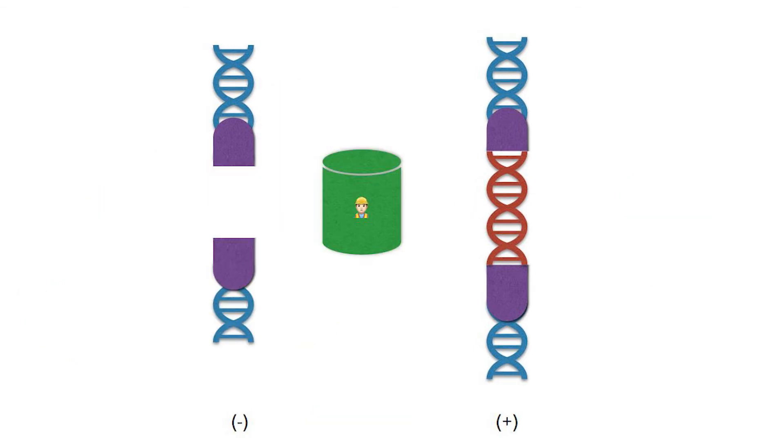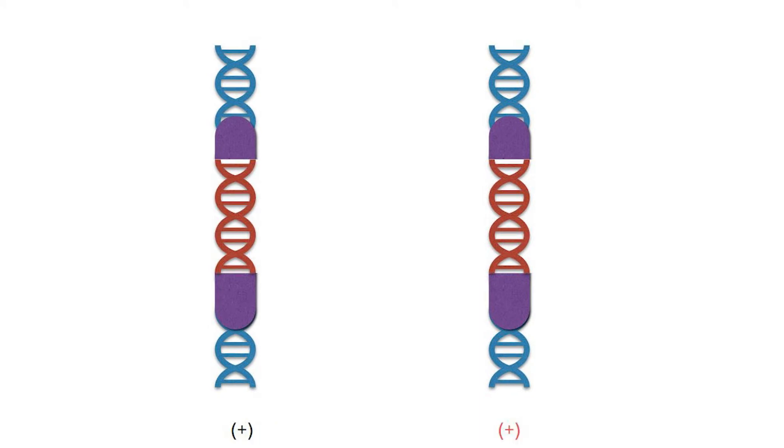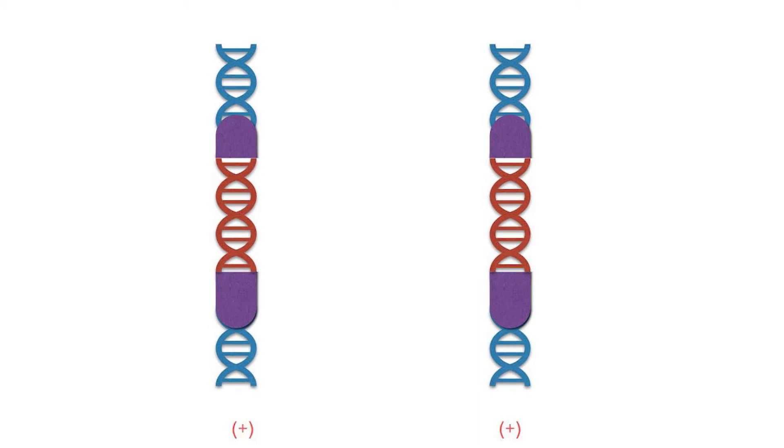Once cut, this induces a DNA repair mechanism that utilizes the plus copy as a template to repair the minus copy. As a result of the repair, initially, there is only one plus copy, but now there are two. So, this is how the selfish gene propagates itself.